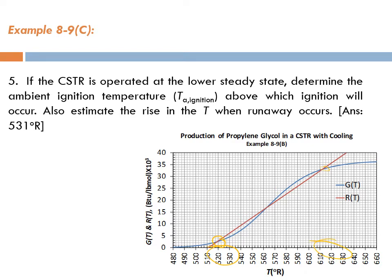Ignition would mean the temperature shoots up from around 520 Rankine all the way to around 615 Rankine — that's the higher steady state. So you are afraid of ignition taking place. The question asks: if the CSTR is operated at the lower steady state, determine the ambient ignition temperature Ta above which ignition will occur.